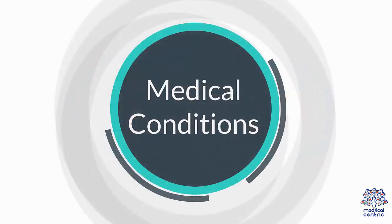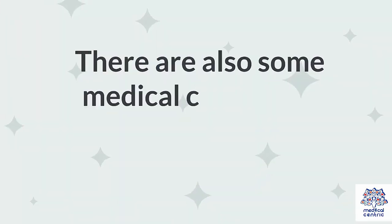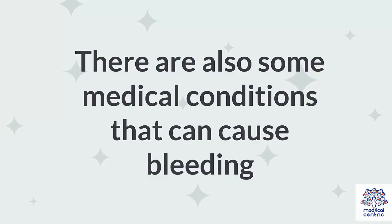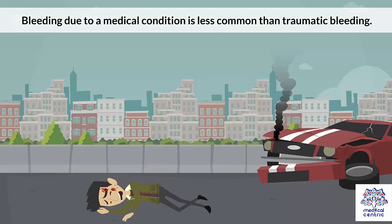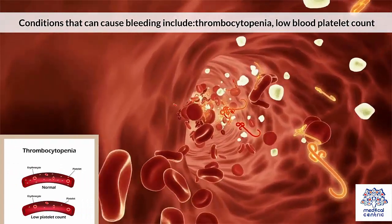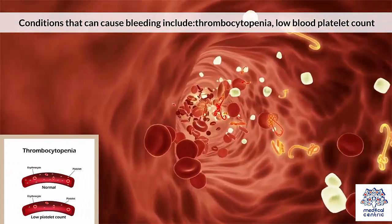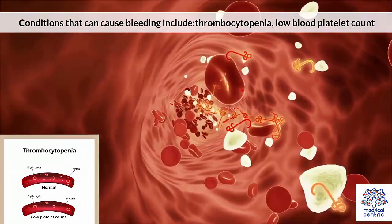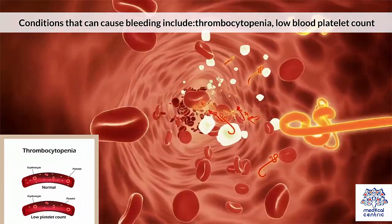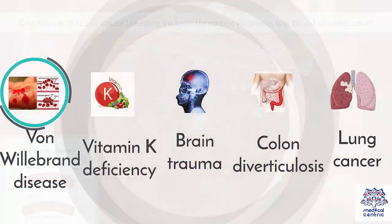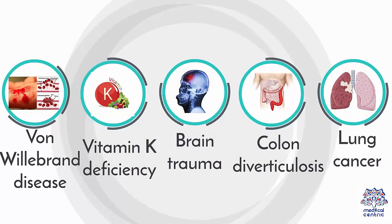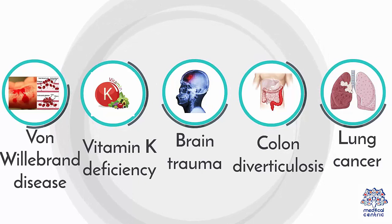2. Medical conditions. There are also some medical conditions that can cause bleeding. Bleeding due to a medical condition is less common than traumatic bleeding. Conditions that can cause bleeding include thrombocytopenia or low blood platelet count, Von Willebrand disease, vitamin K deficiency, and brain trauma.